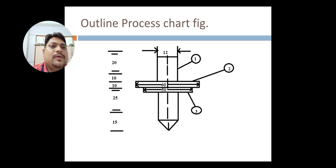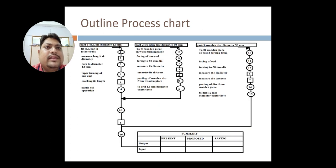First of all, by operation and inspection, we will manufacture all these three parts individually. Then one by one we will assemble it. The operation process chart actually is like this.